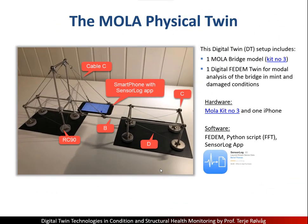This is my physical twin. It's a bridge model assembled with the Moola kit number 3. This Moola kit contains short bar elements, long bar elements, cable elements which act like wires, connector elements, rigid connectors which clamp the beams, and diagonals — all these elements are locked together with magnets. You also have some plastic tubes which you can put on the bars to stiffen them. On top is my smartphone with the sensor log app doing all the measurements.